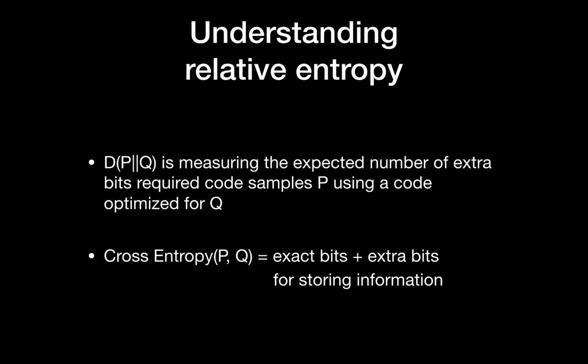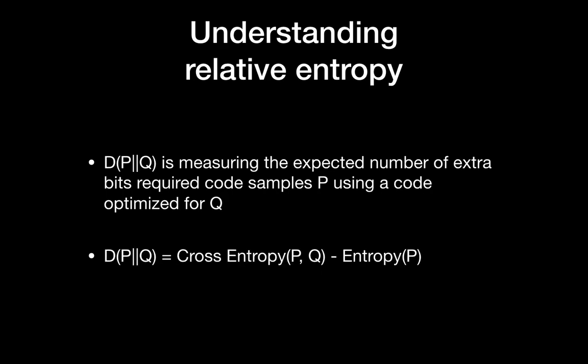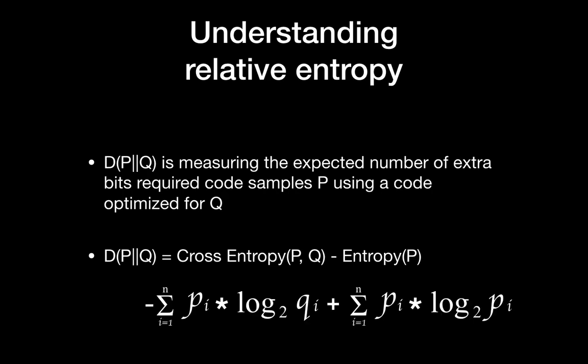How can we get the number of extra bits? We have learned from the previous video that cross entropy is the number of exact bits plus extra bits, and that is why cross entropy is equal to or greater than entropy. Entropy stands for the exact bits for the information, so we can simply get the extra bits by calculating cross entropy minus entropy. So we can come up with the KL divergence equation just like shown here.